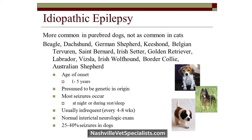Idiopathic epilepsy is more common in dogs than cats, and more common in purebred dogs, though any dog can get it. Certain breeds have a known genetic component. Age of onset is typically between 1 and 5 years, though some breeds may have seizures as early as 8-10 weeks. Seizures tend to occur at night or at rest. Initially they are fairly infrequent — once or twice a month. Most importantly, these dogs are normal between seizures, with no neurological abnormalities outside of the post-ictal period.